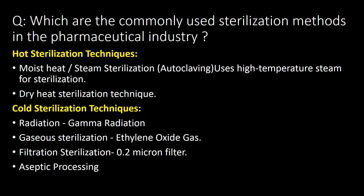In the case of cold sterilization technique, sterilization is achieved at room temperature, and it is done with four techniques. First, radiation, in which we expose the material to radiations like gamma radiation. Second, gaseous sterilization, in which ethylene oxide gas is commonly used. Third, filtration method, and fourth, aseptic processing.